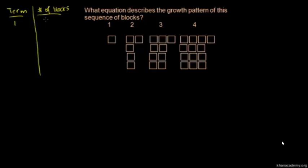In our first term we had one block. In our second term, it looks just like the first term but we added a column of four blocks — so it's one plus four, giving us five blocks. Then in our third term, it looks just like the second term but we added another column of four blocks on the left-hand side. So we added four more blocks, giving us nine blocks. Each time we're adding four blocks.